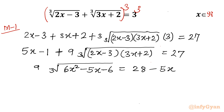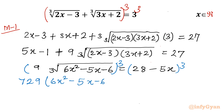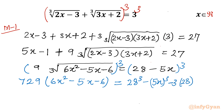Now I will take cubing once again — cube both sides. So 9³ = 729, and cube root and cube cancel, giving (6x²-5x-6) on the left. The right side expands as (a-b)³ = a³ - b³ - 3a²b + 3ab².